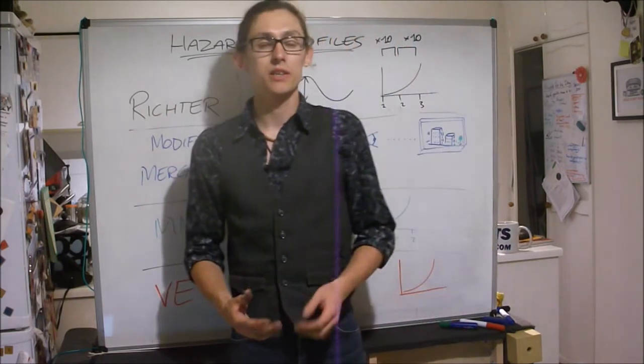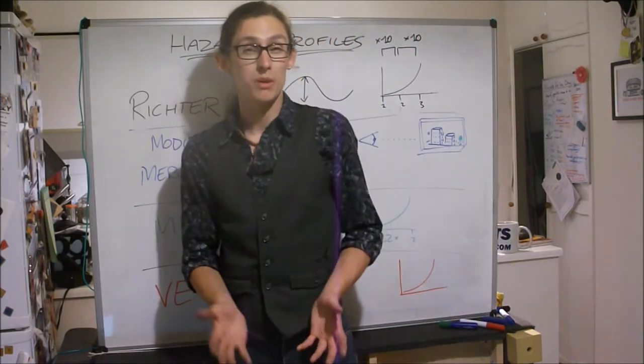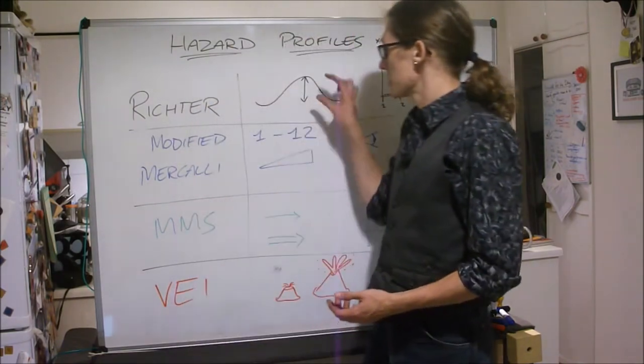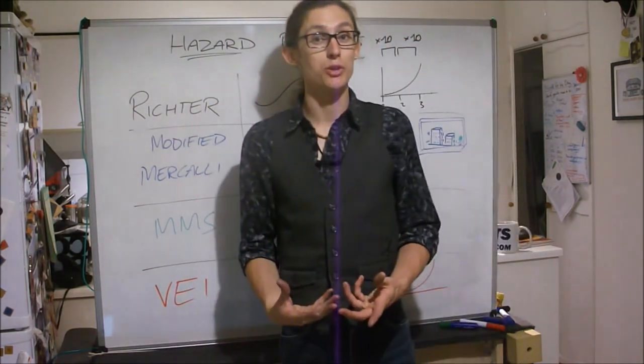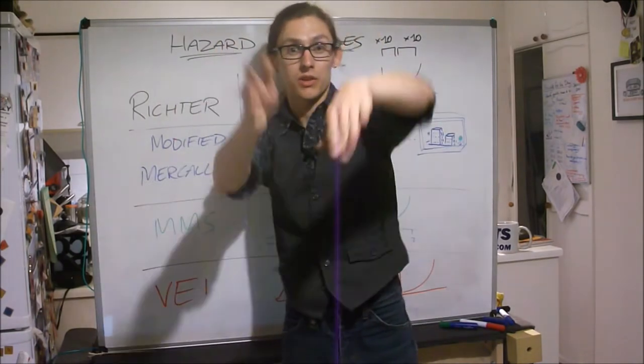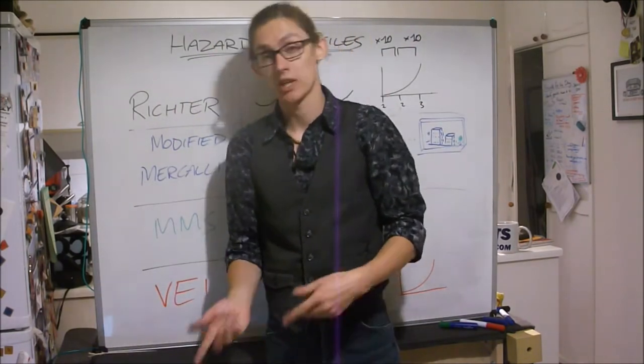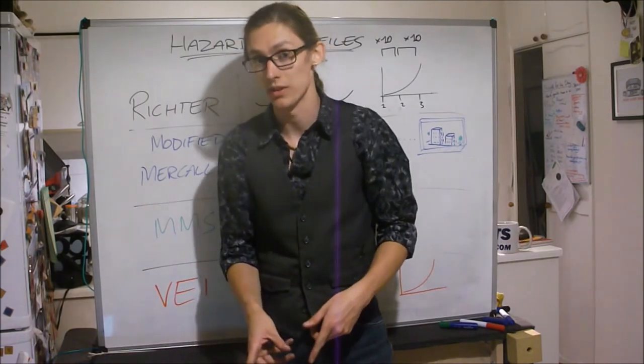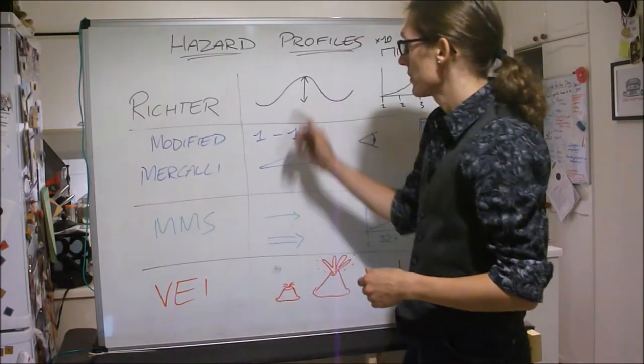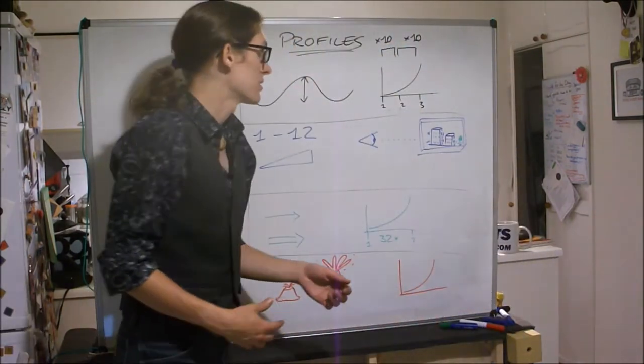The Richter scale is the one that you're probably most familiar with. It is an earthquake scale and it measures the height or amplitude of the waves, the earthquake waves, the S waves. Check out previous videos if you don't know what an S wave is. It measures the height of the S wave.